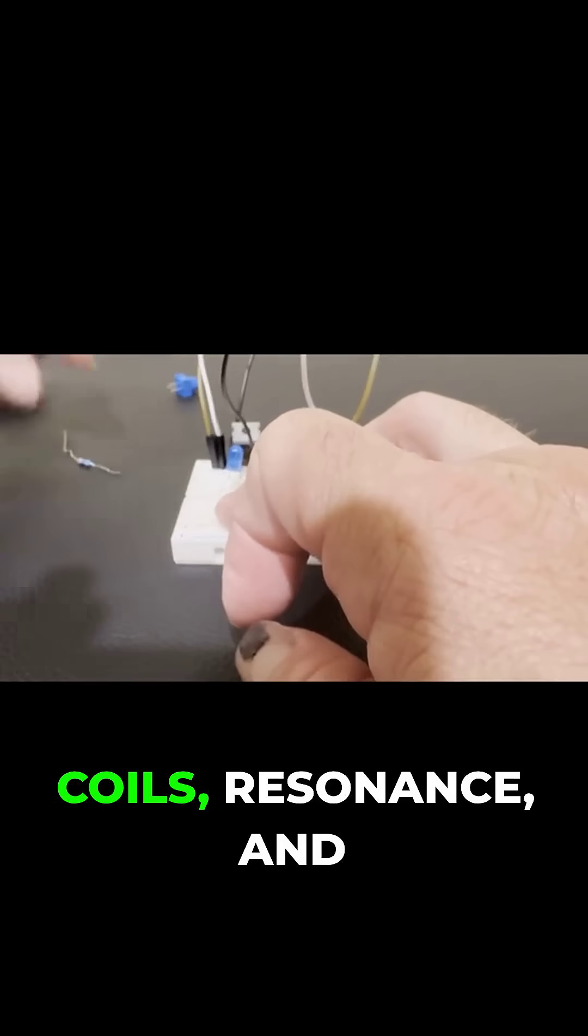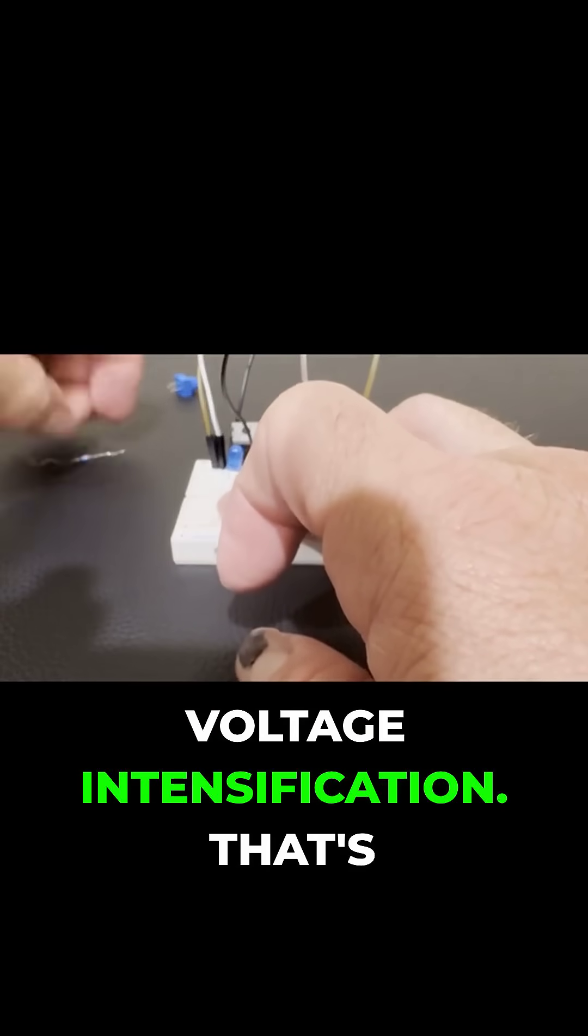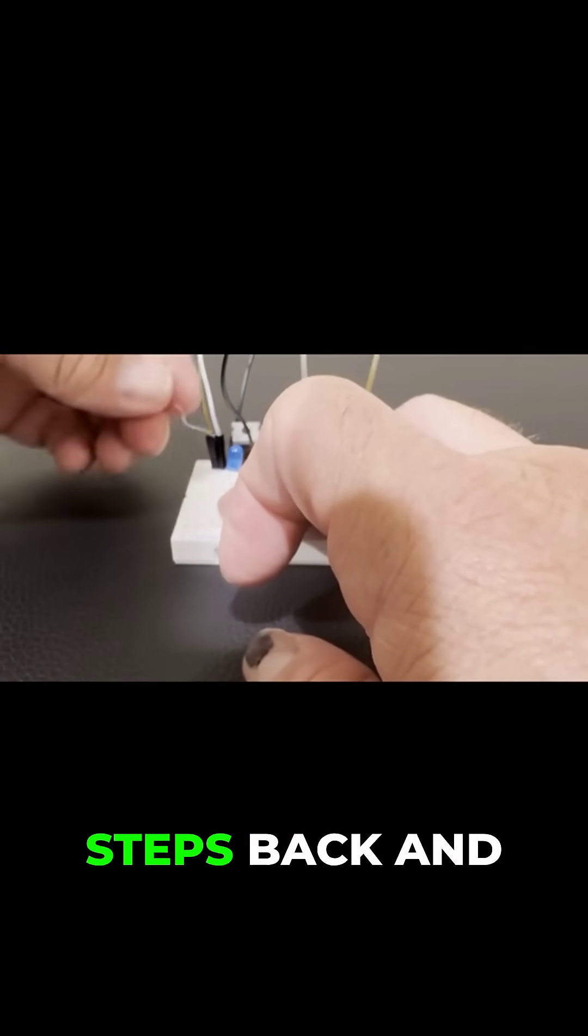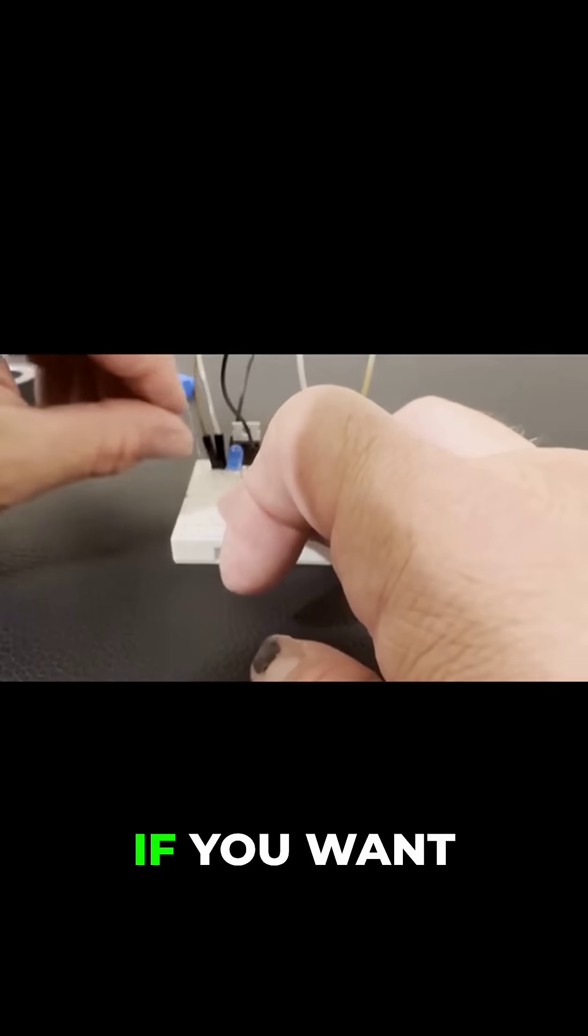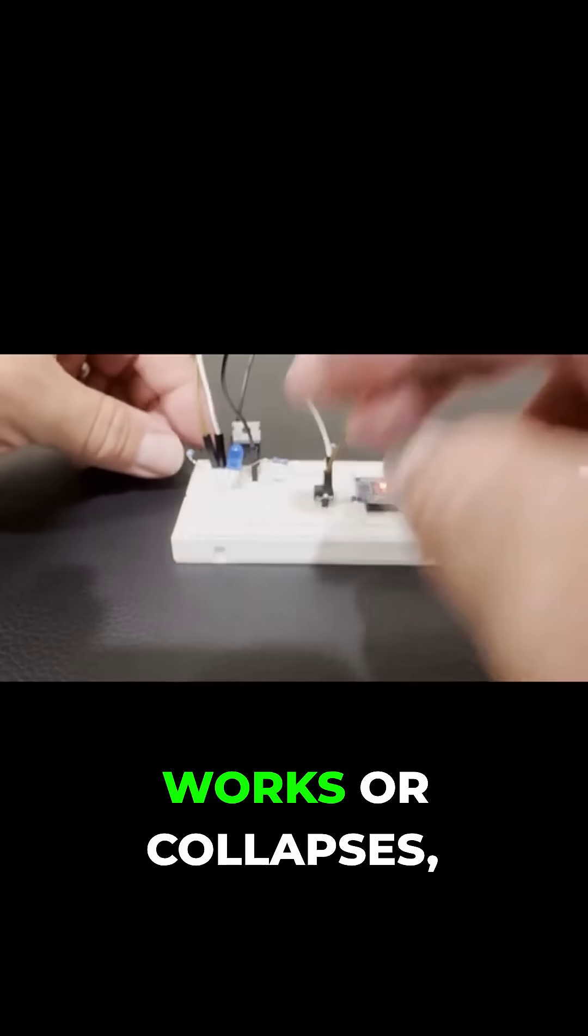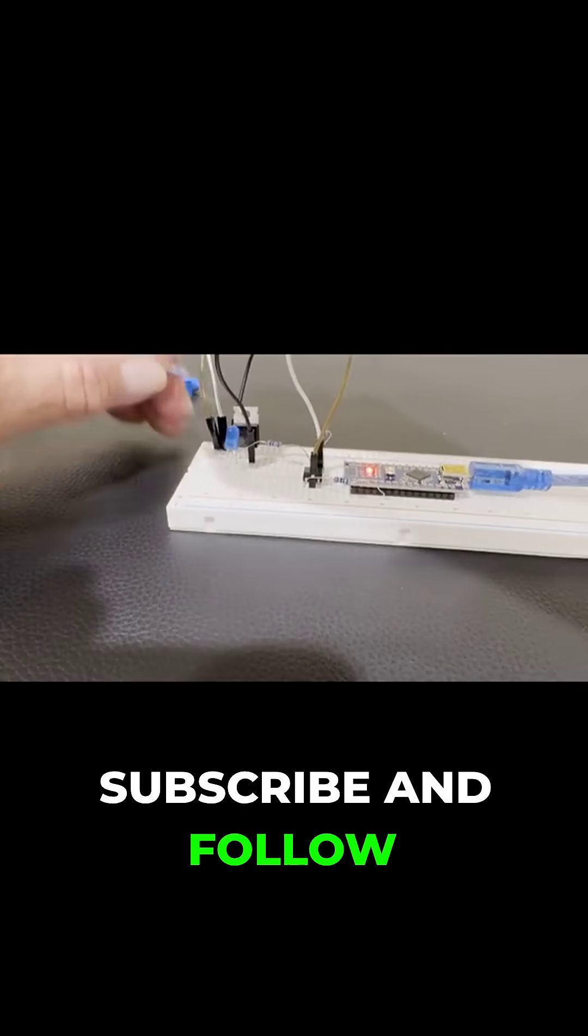In the next phase we'll add coils, resonance, and voltage intensification. That's where the current steps back and the voltage climbs, and that's where it gets really interesting. If you want to know whether this legendary circuit works or collapses, subscribe and follow along.